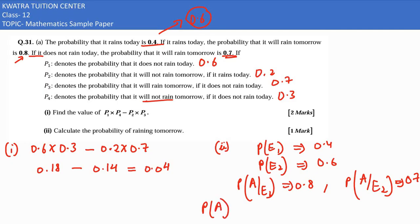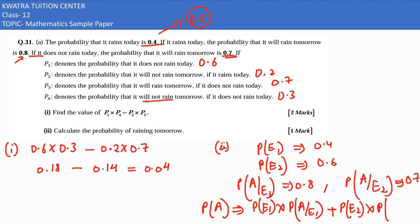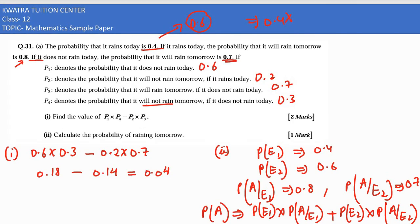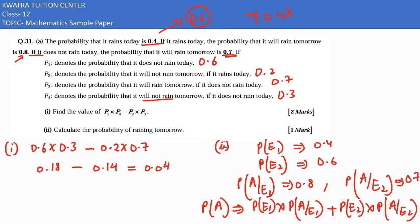Now you have to apply the total probability rule here. The probability of raining tomorrow equals P(E1) into P(A|E1) plus P(E2) into P(A|E2). So the first value is 0.4 multiplied by 0.8, plus 0.6 multiplied by 0.7. That gives 0.32 plus 0.42, which equals 0.74. So the probability of raining tomorrow is 0.74.